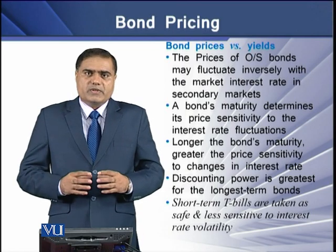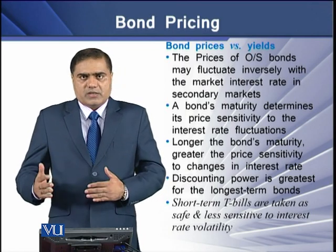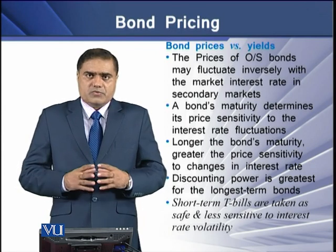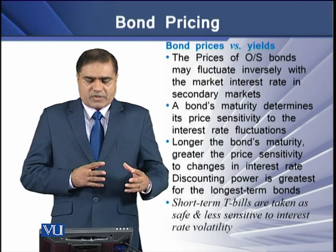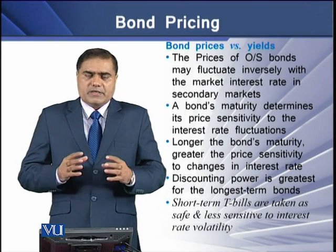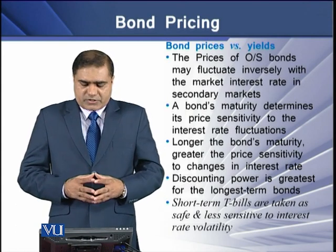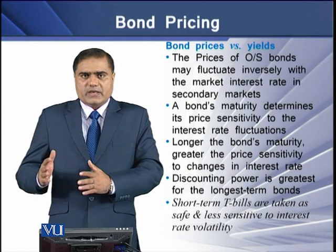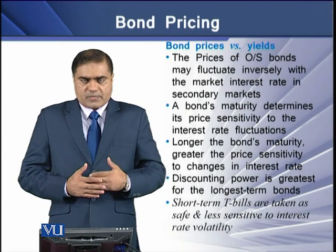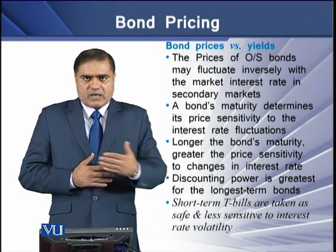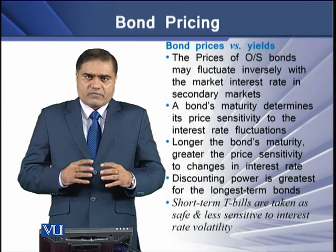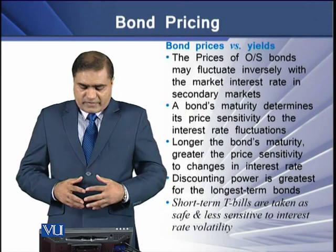What is the difference between bond prices and yields? The prices of any outstanding bond may fluctuate inversely with the market interest rate in the secondary markets. A bond's maturity determines its price sensitivity to fluctuations in interest rates. This means that the longer the bond's maturity, the greater the price sensitivity to changes in interest rates, which gives us a greater discounting power in the bond's valuation.